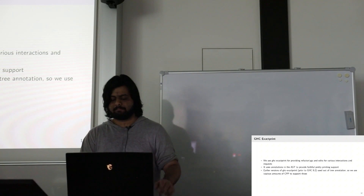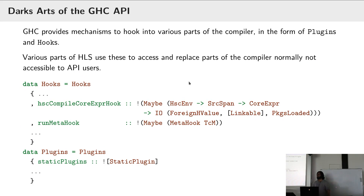Finally, let's look at some of the more creative ways that we use the GHC API. GHC provides two types — Hooks and Plugins — which are two mechanisms to hook into various parts of the compiler, override things, and basically do your own thing with GHC. It's not comprehensive but it's quite expressive in the kinds of things you can do.